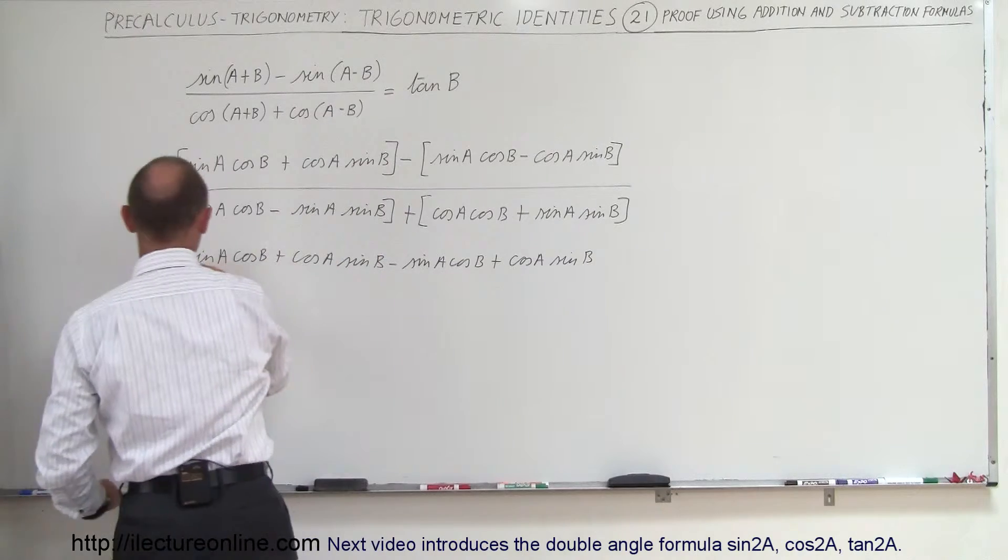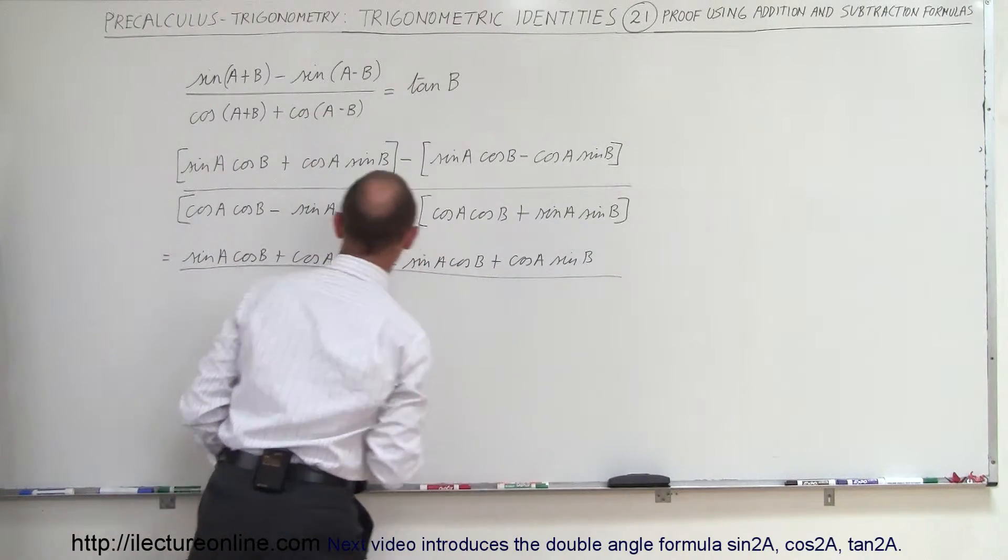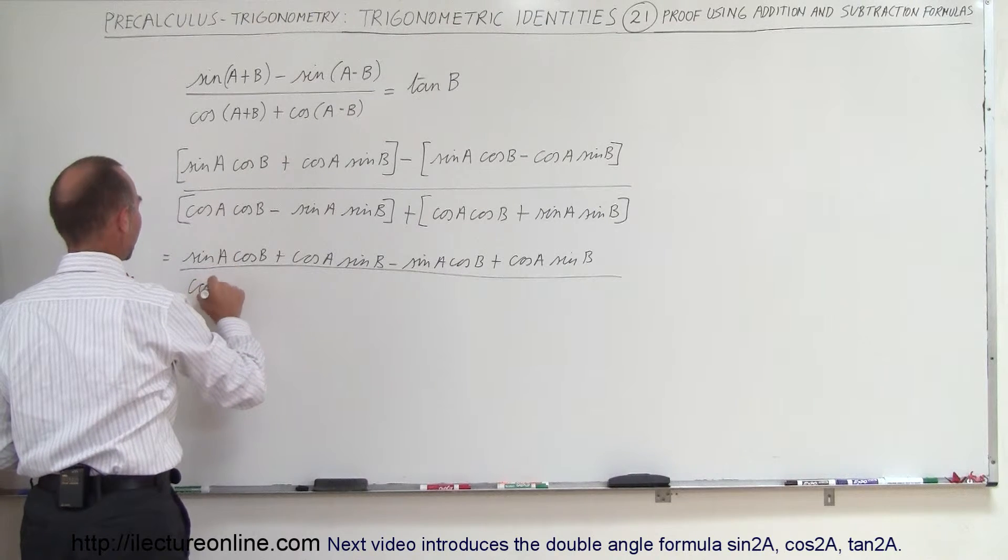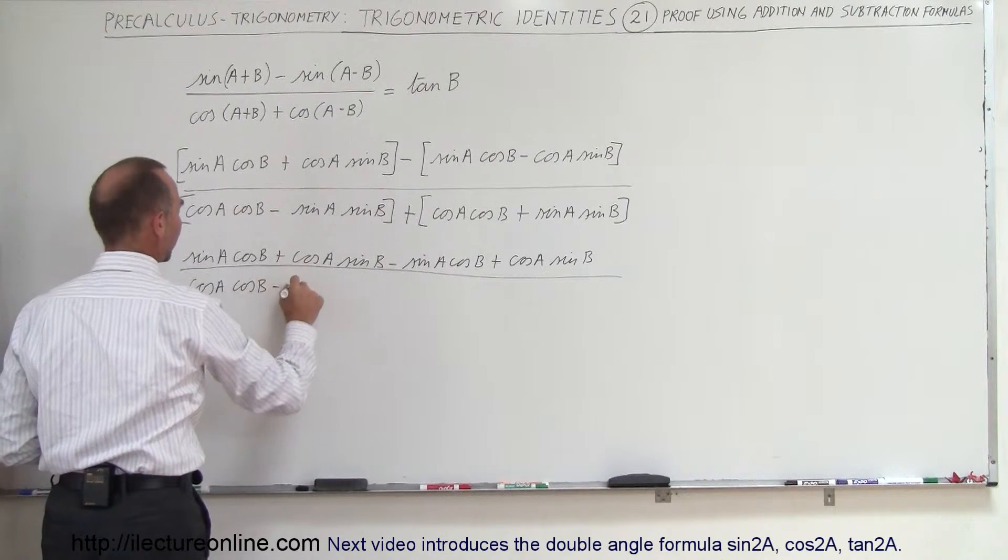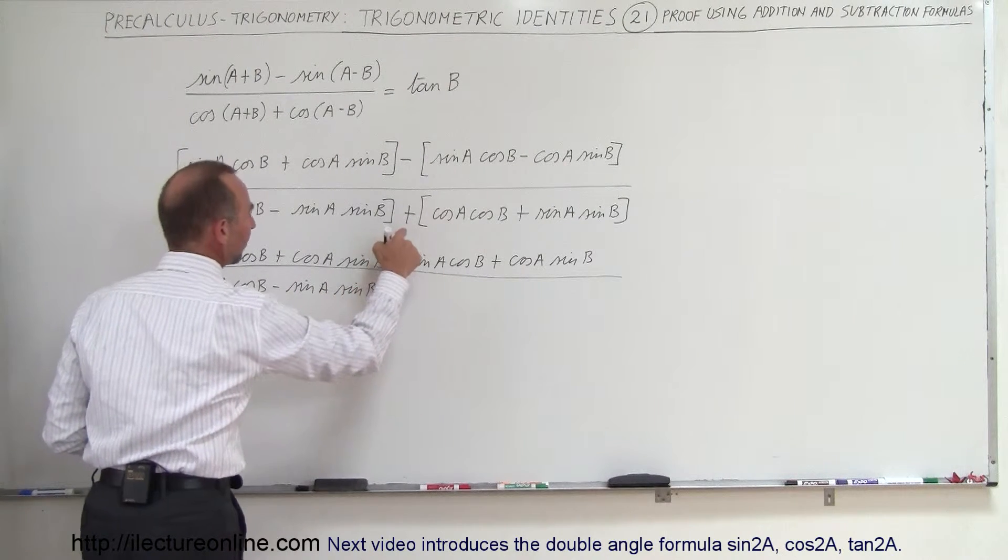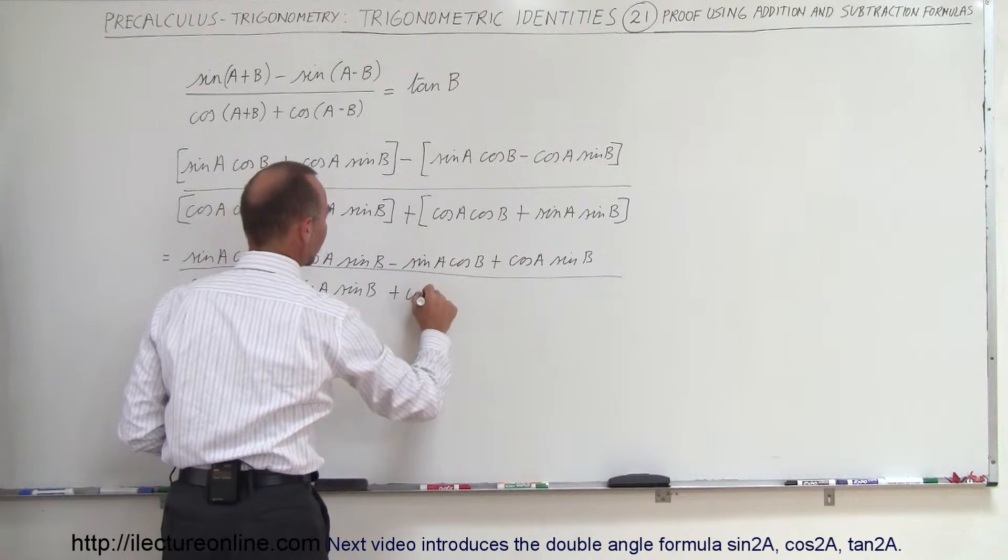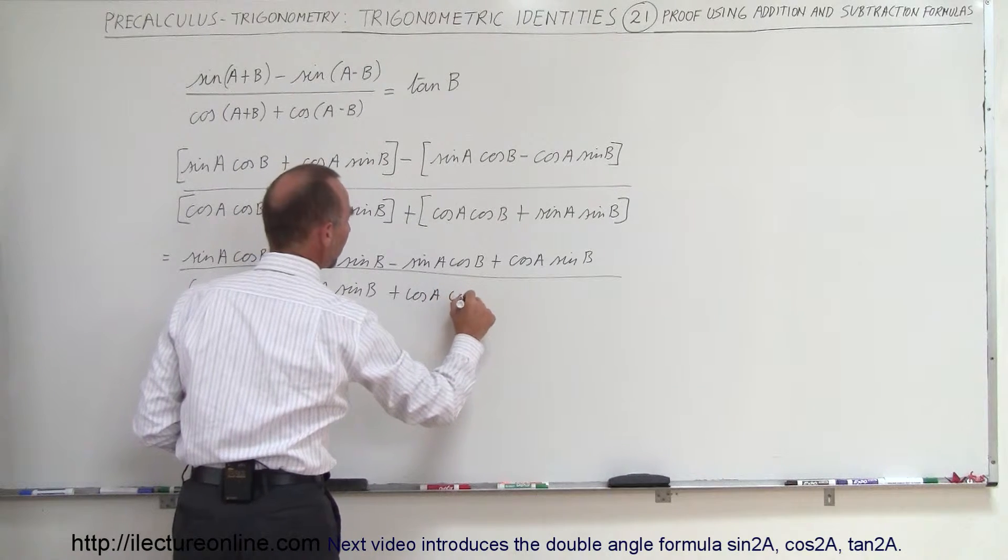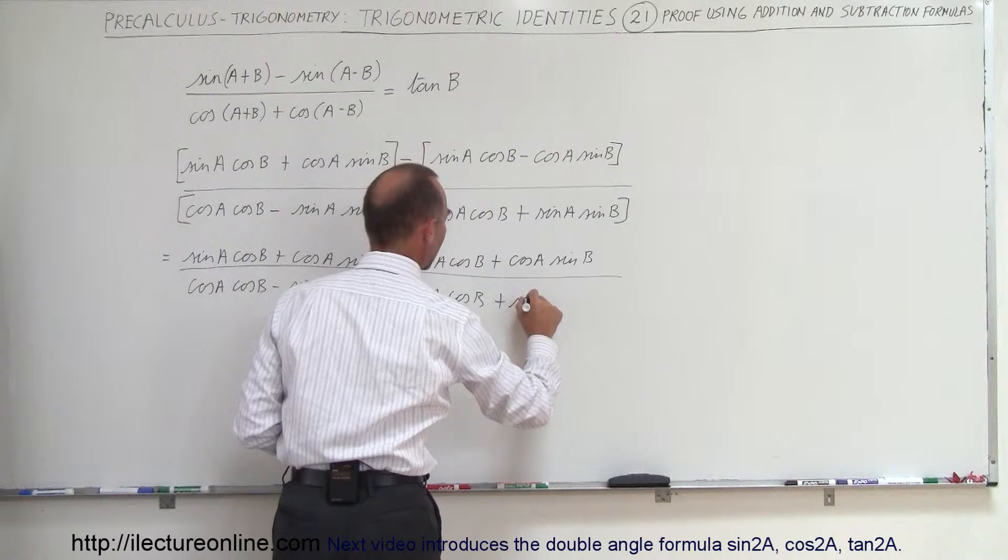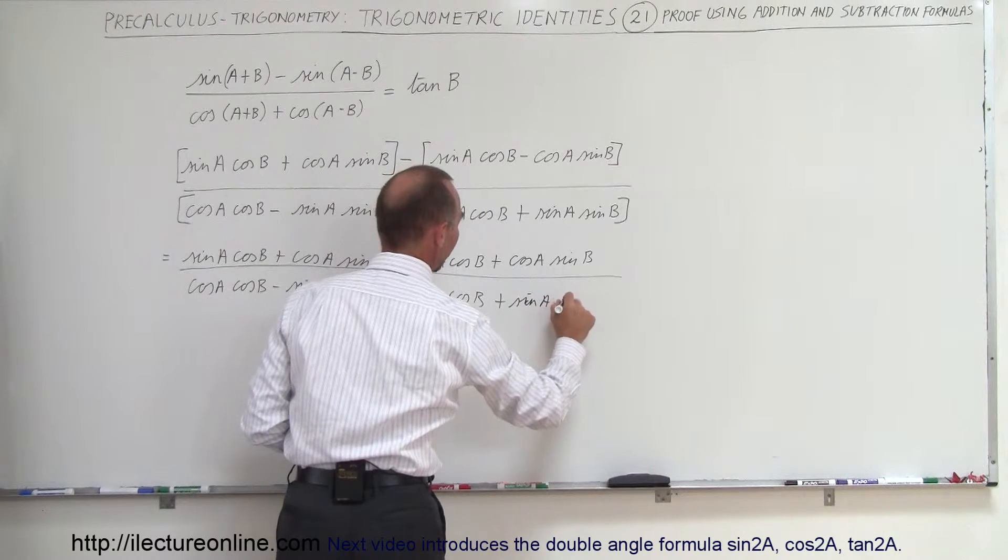And the whole thing will now be divided by, not quite a straight line, but anyway, so we have cosine of a, cosine b, minus sine a, sine b, this becomes plus cosine a, cosine b, and plus times plus is plus sine a, sine b.